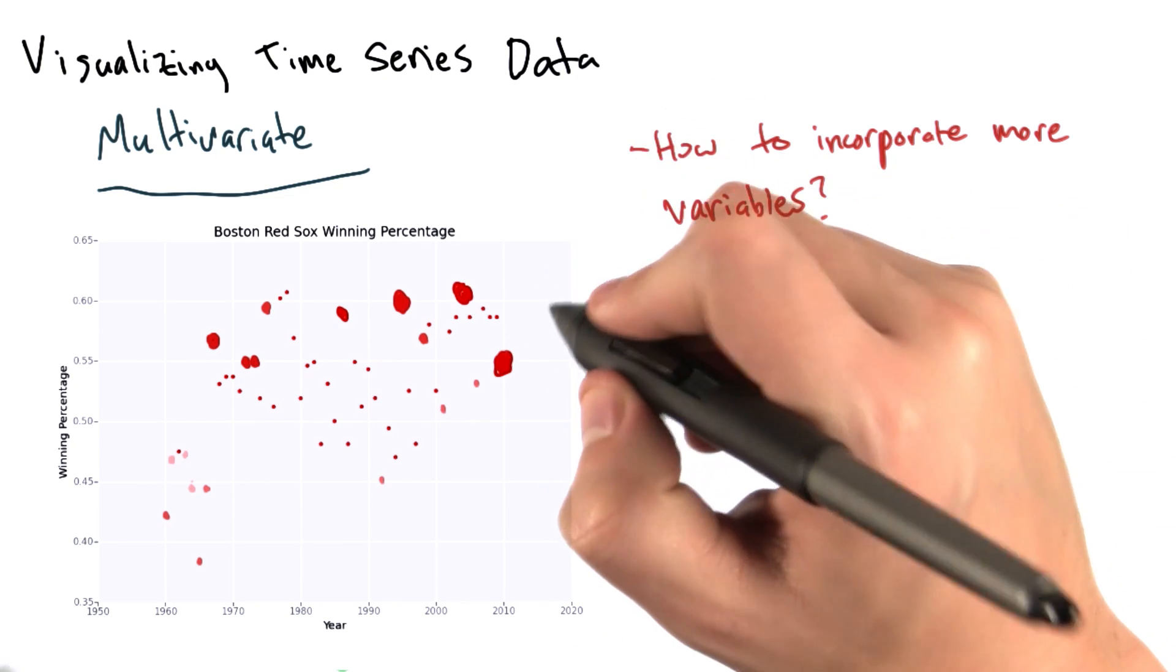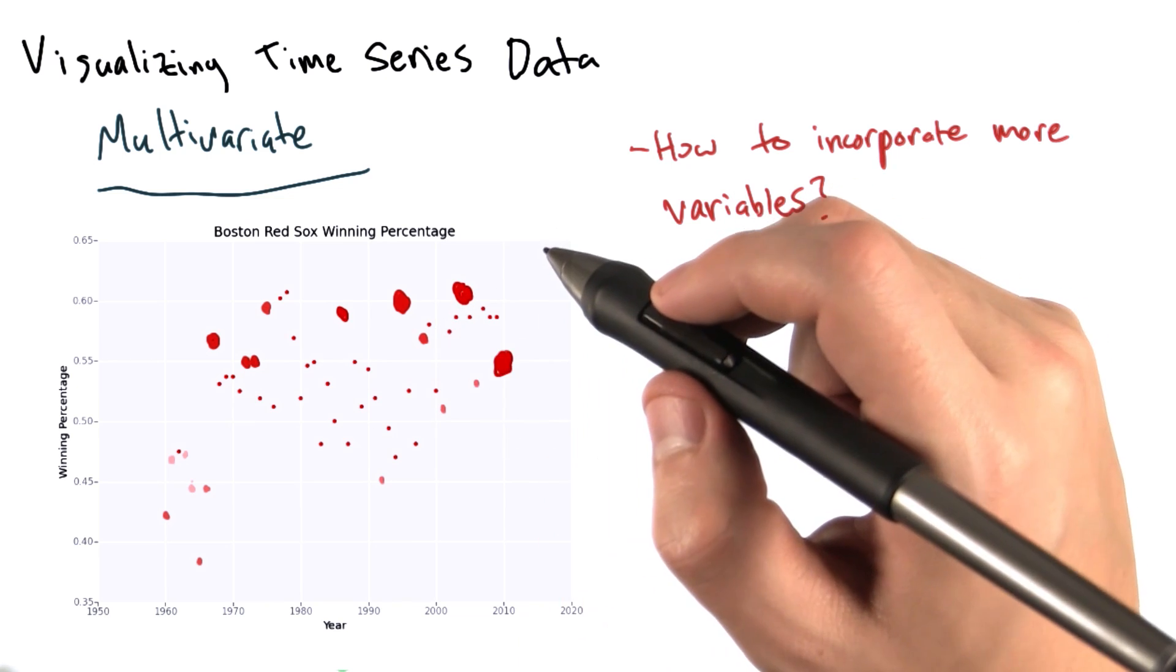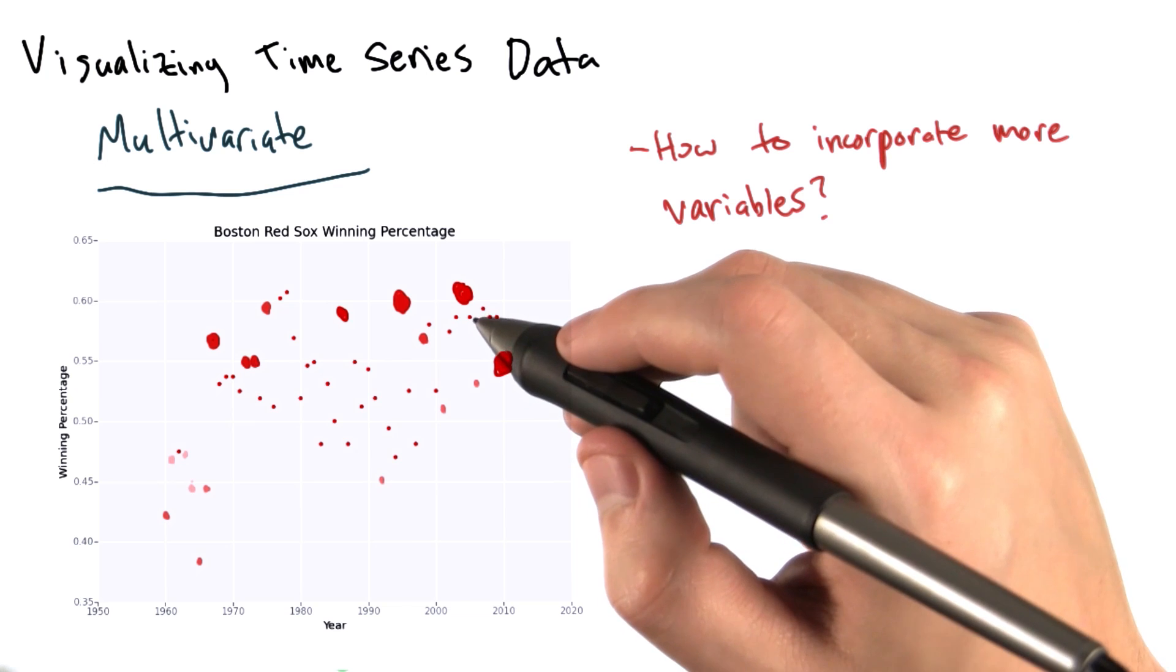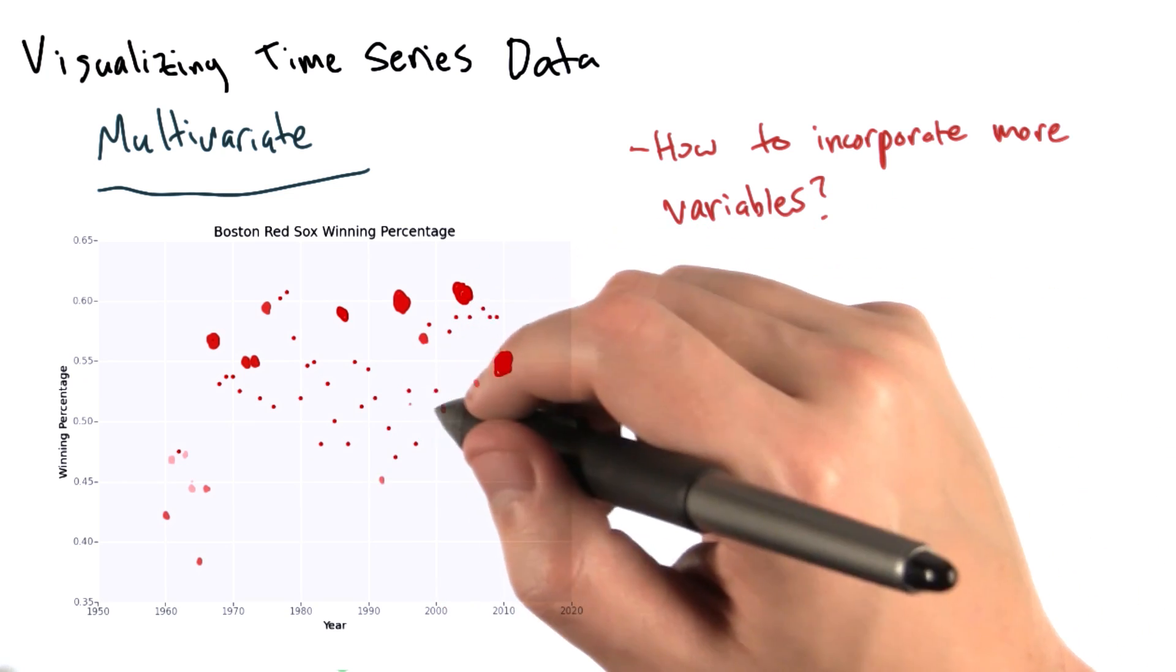We can use the size of the points to represent the number of home runs hit by the Red Sox players that year. Dots that are larger meant that more home runs were hit in that year, whereas smaller dots mean that fewer home runs were hit.